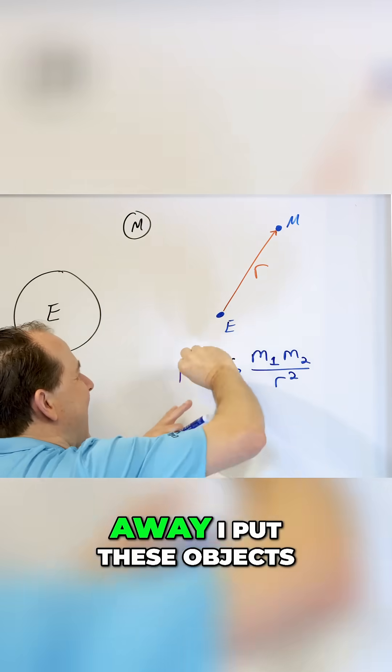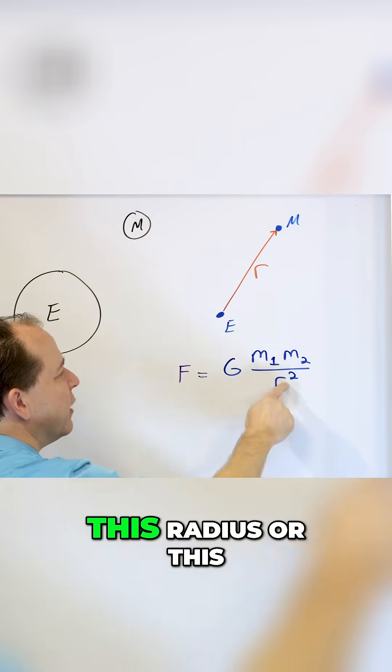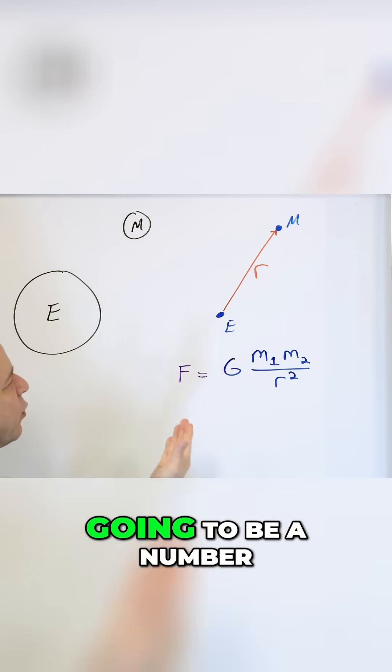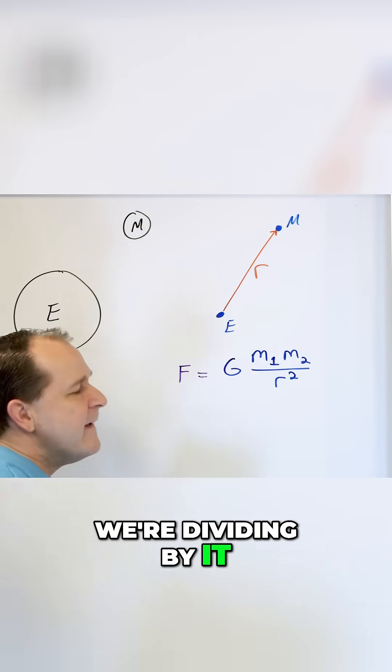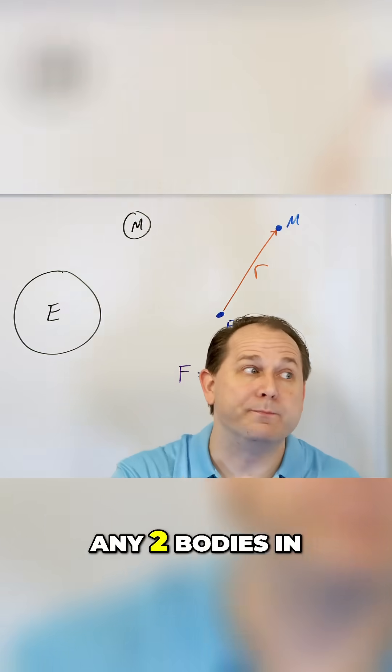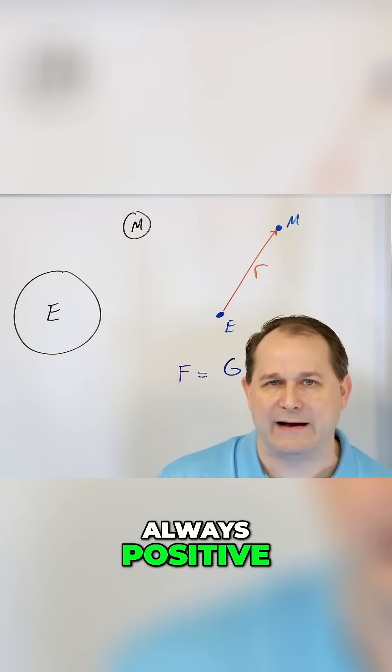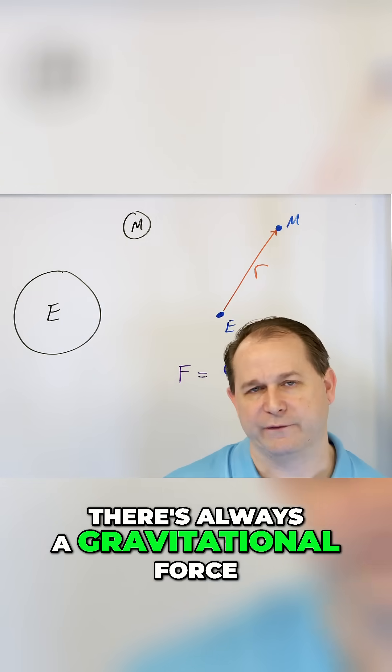Then no matter how far away I put these objects, this radius or this distance is still going to be a number. We're dividing by it. So the force between any two bodies in the solar system is always positive. There's always a gravitational force.